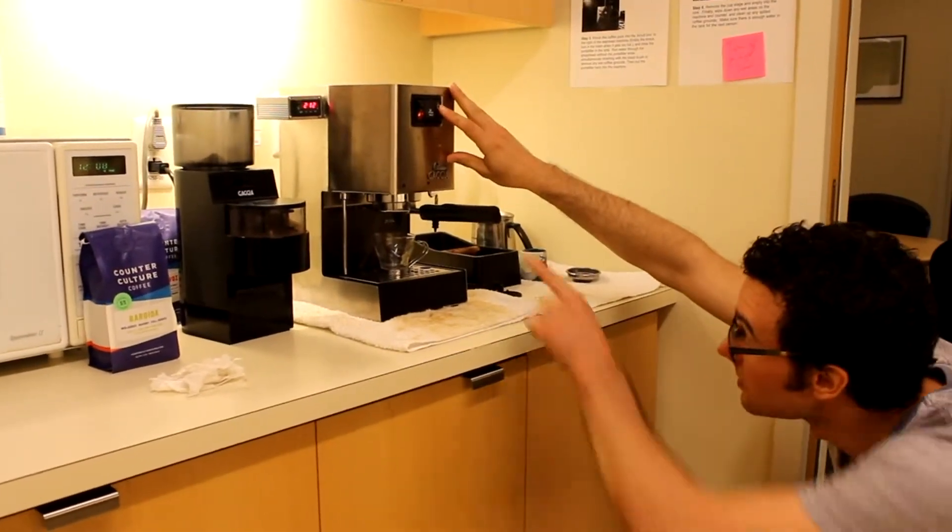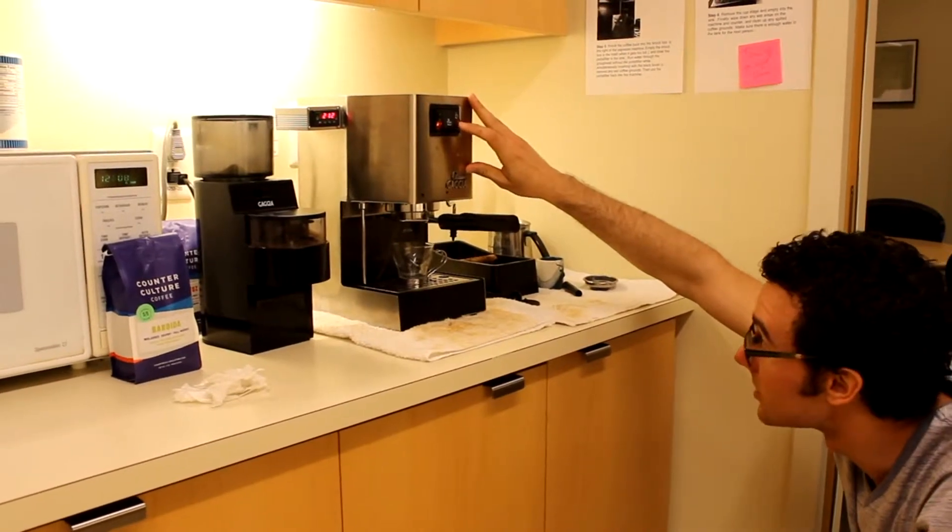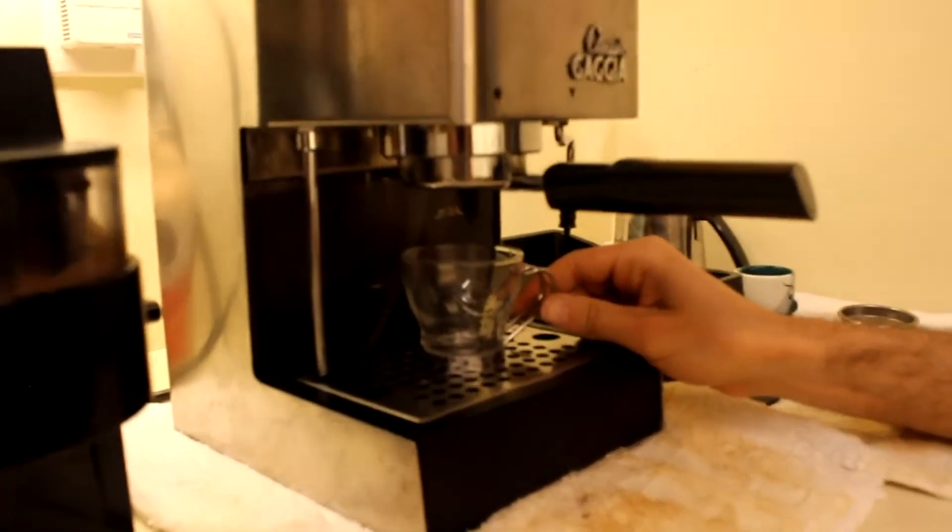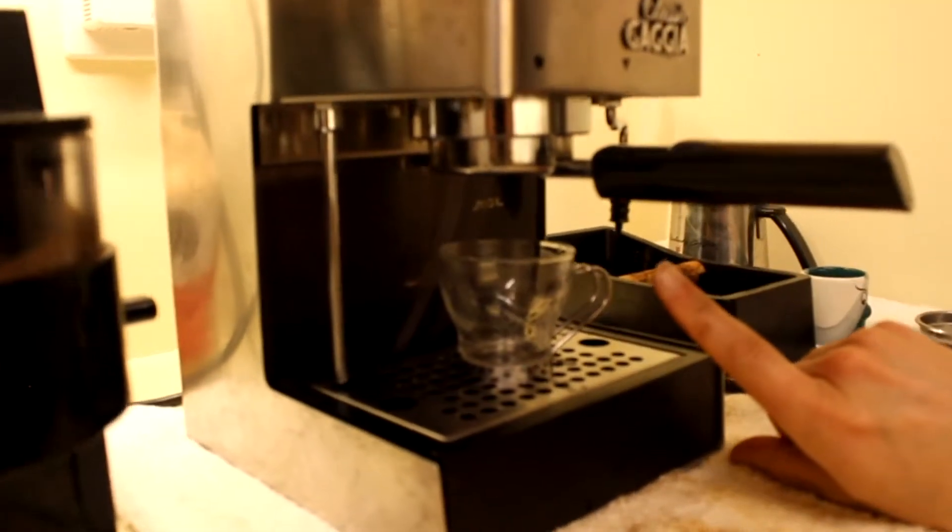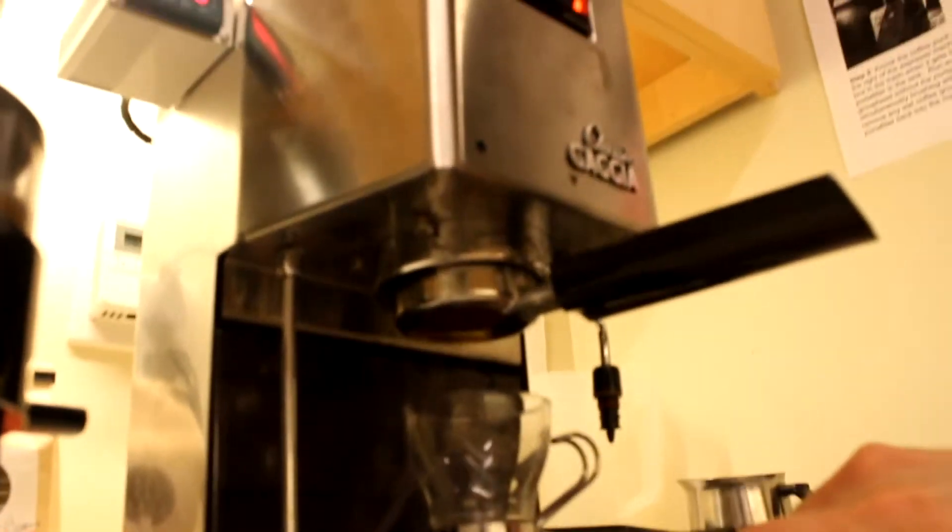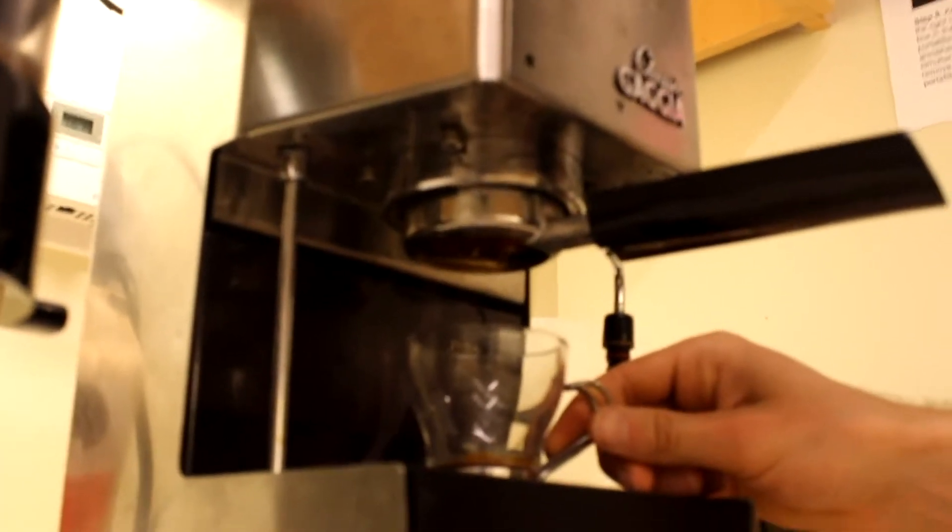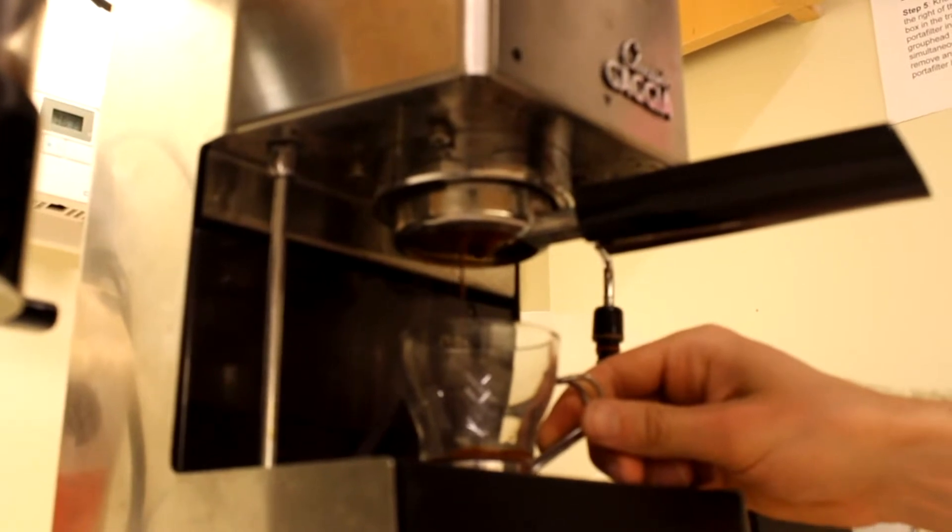Start to press this button and take a look at how this is going to extract. This may be a little slow because there's a lot of coffee in there. This is going to be over-extracted because I had too much coffee in there, but I'm going to let it go. I can argue that was a pre-infusion.